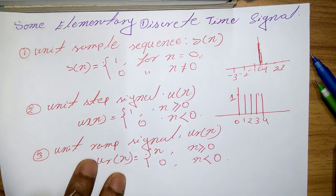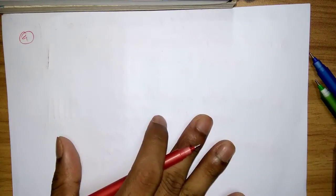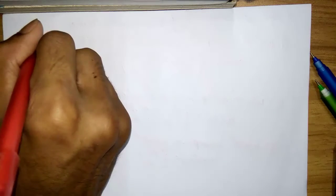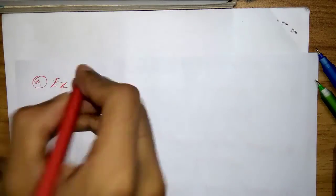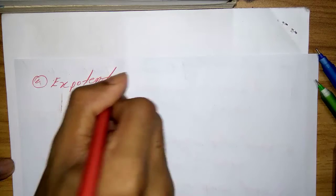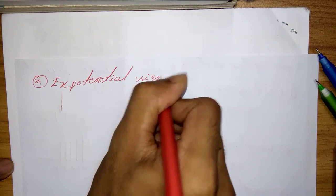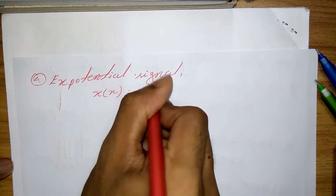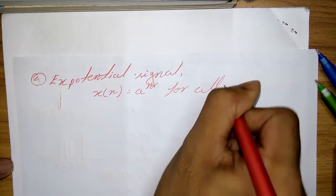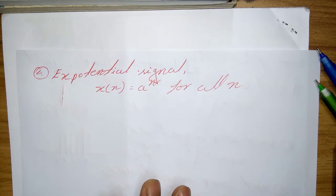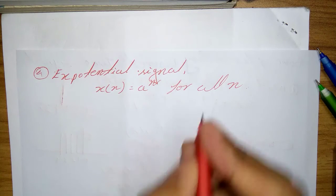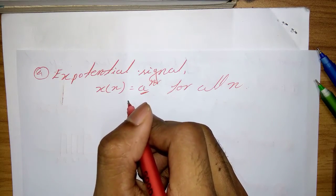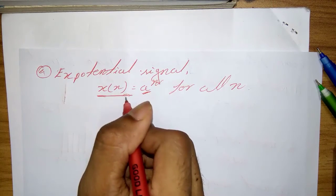So next one is the exponential signal. So actually, exponential signal x of n equal a to the power n for all n. If the parameter a is real, then x of n is a real signal.